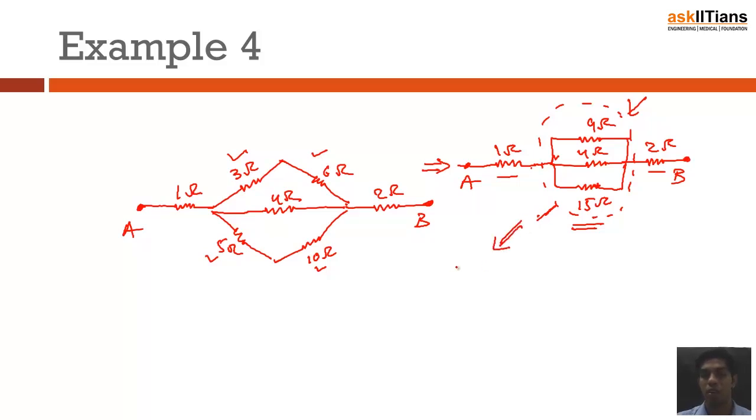If we find out the value of the equivalent resistance for this particular case, the equivalent circuit comes out to be this: 1 ohm and 2.34 ohm. If you could do the calculation, you will get 2.34 as the resultant of that. So this is point B, this is point A.